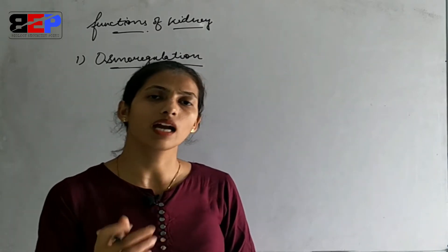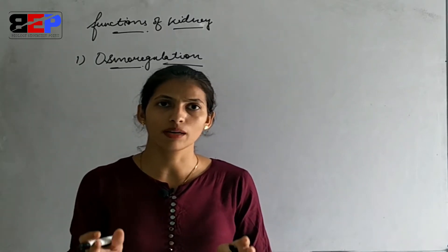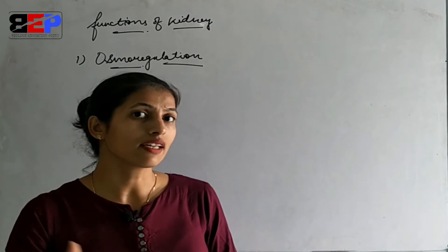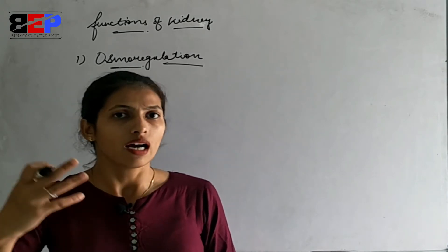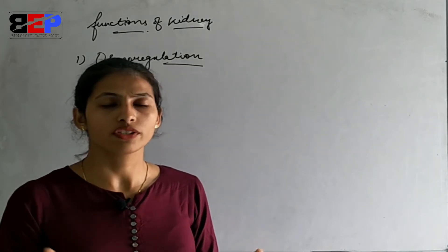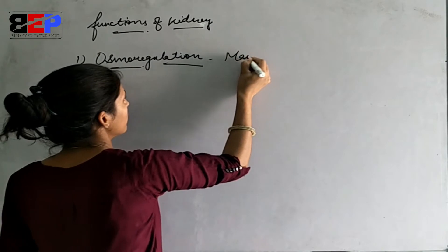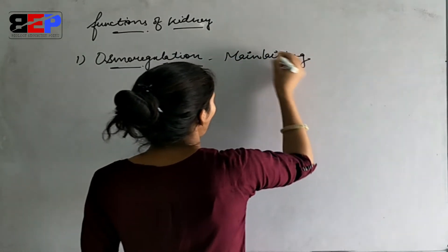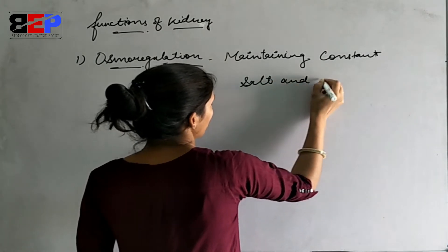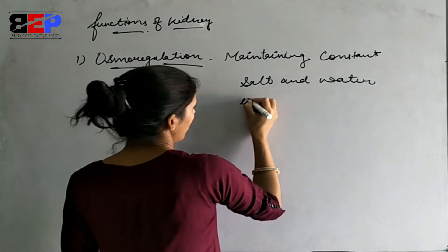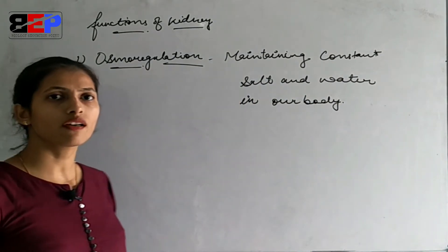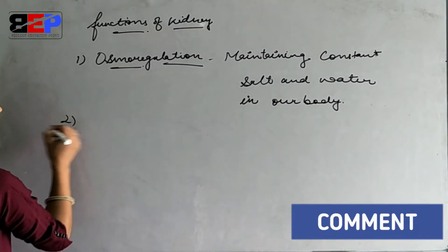Urine formation is the purpose of the body to remove excess amounts of salt, water, or metabolic waste. If our body has excess salt or excess water, it will be removed from our internal environment. So, osmoregulation — the maintenance of constant salt and water in our body — is performed by the kidney.